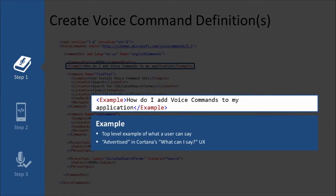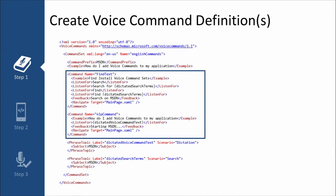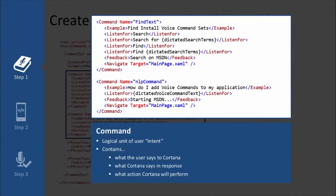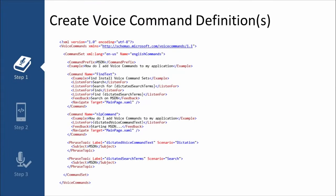Next you have an example. This is all about informing the user what this app is going to be capable of — this is advertised. Whenever you say 'Cortana, what can I say?', she's going to show a few apps at the bottom, and you're going to see this advertisement — whatever you put in that example string shows up just underneath your app. But every command needs to start with that prefix, so every time you want to start this app, you have to say the name of the prefix and then follow it with the command.